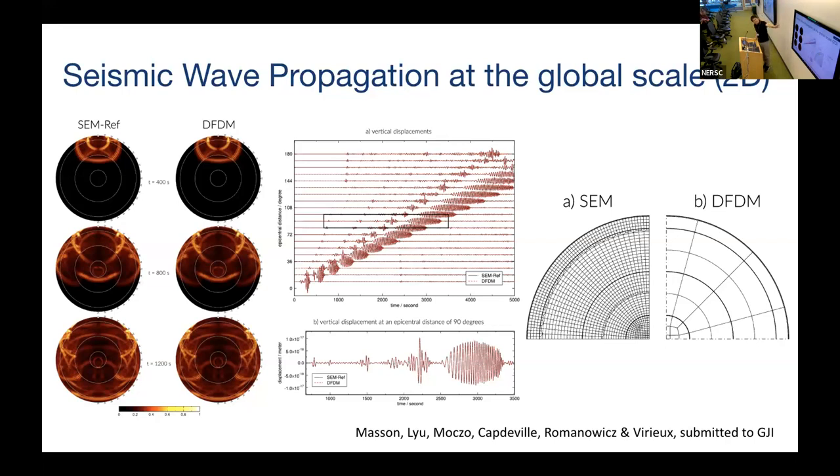The left columns show the benchmark of the popular spectral element method code and the proposed DFDM. The wave fields at different time steps are almost the same. The middle shows the waveform benchmark, which is also very similar.